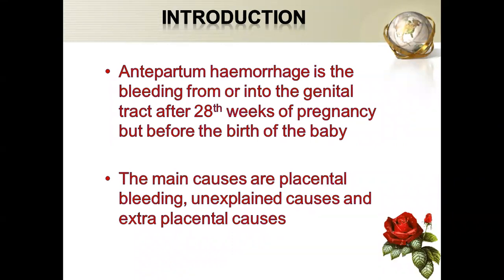Antepartum hemorrhage is mainly caused by three etiological factors. One, bleeding from the placental site. Second, unexplained causes. And the third one is extra-placental causes. So the reason behind antepartum hemorrhage can be placental bleeding, unexplained causes, and extra-placental causes.